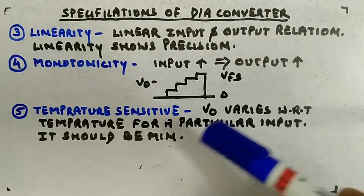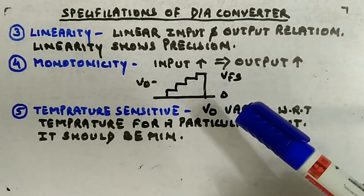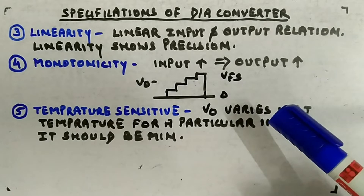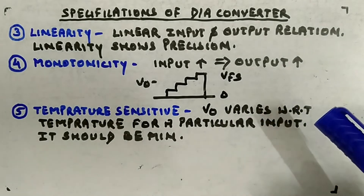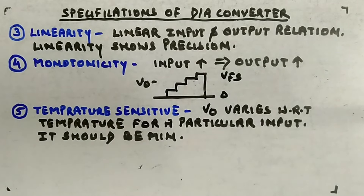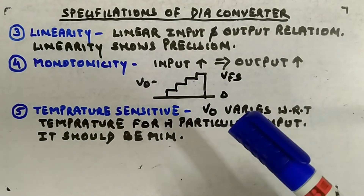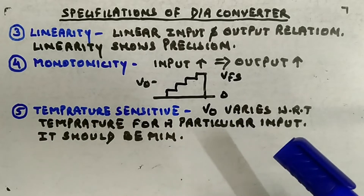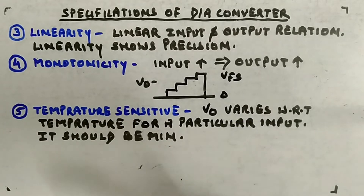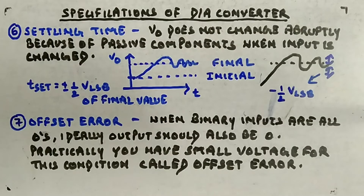Then there is temperature sensitivity. The output voltage V_out should not vary with respect to temperature for a particular given input, and this variation should be minimum as much as possible. The less the variation with temperature, the better it is for the DAC. There are two more parameters: settling time and offset error.